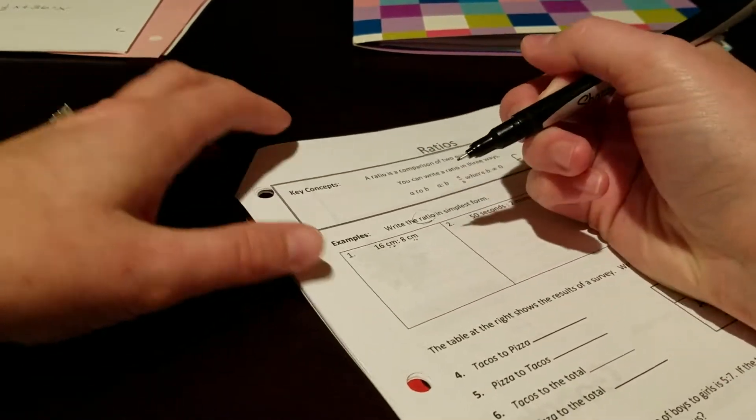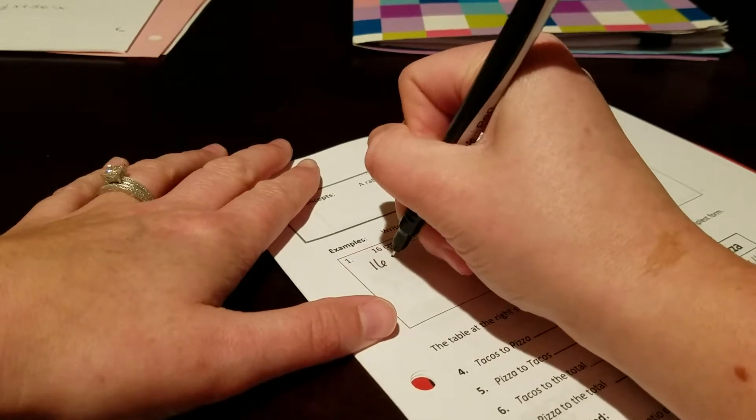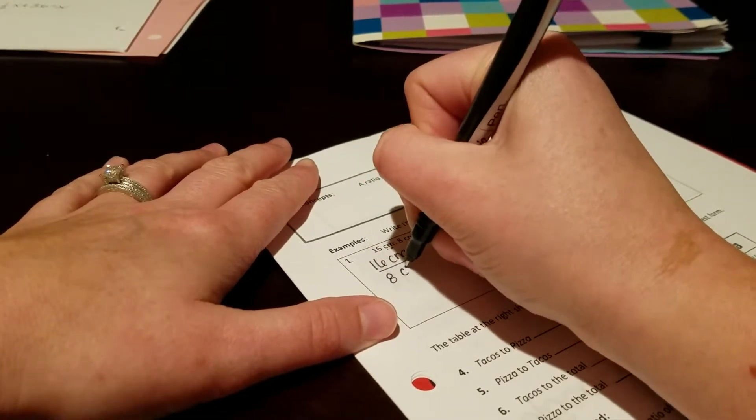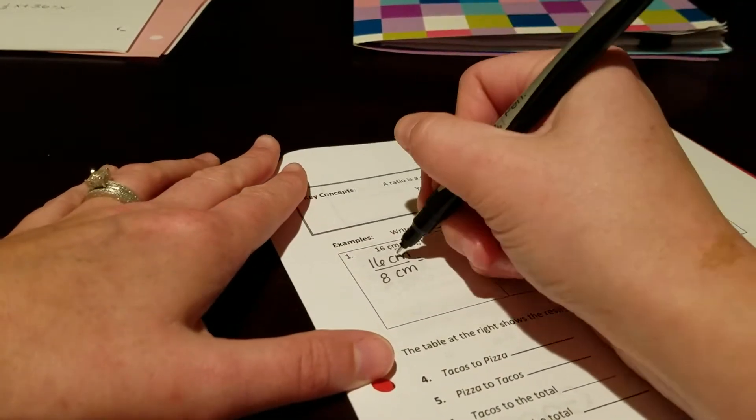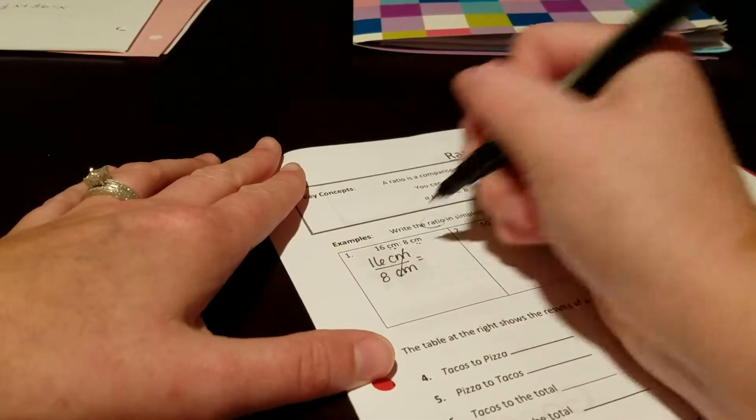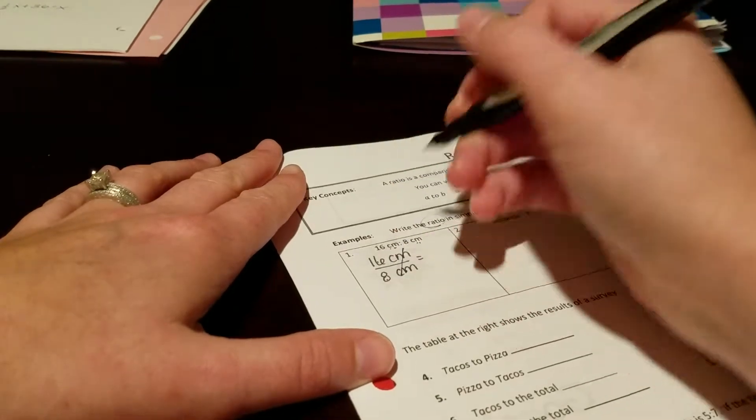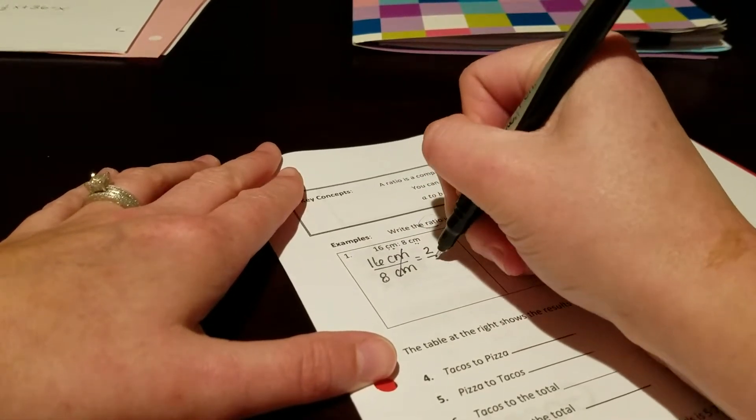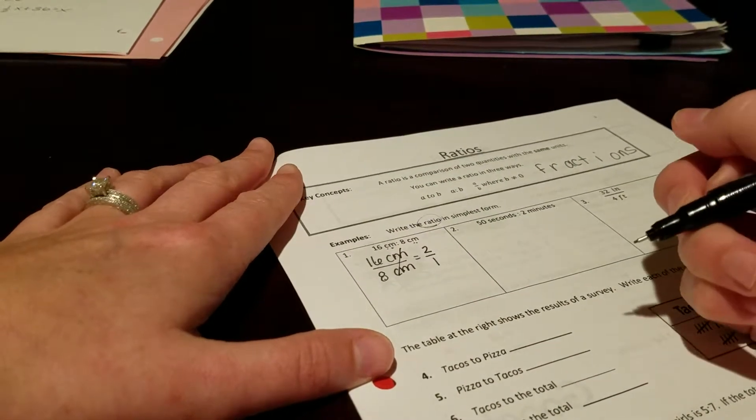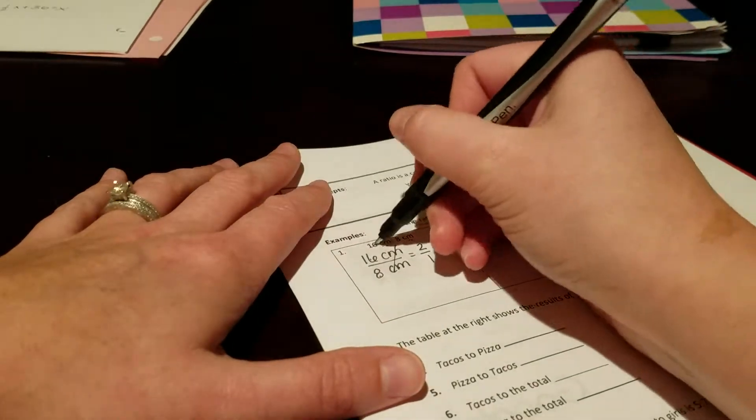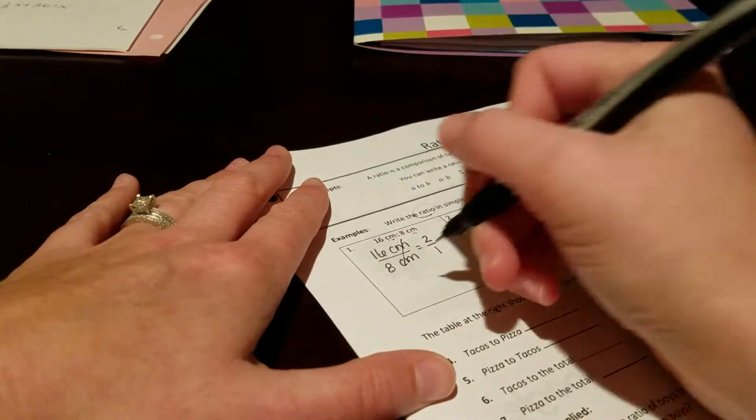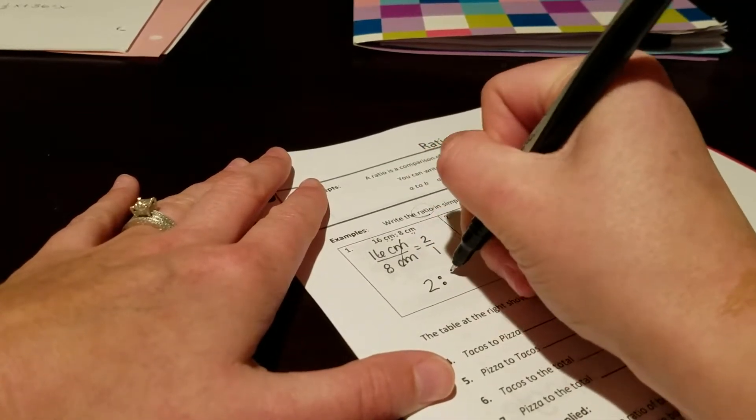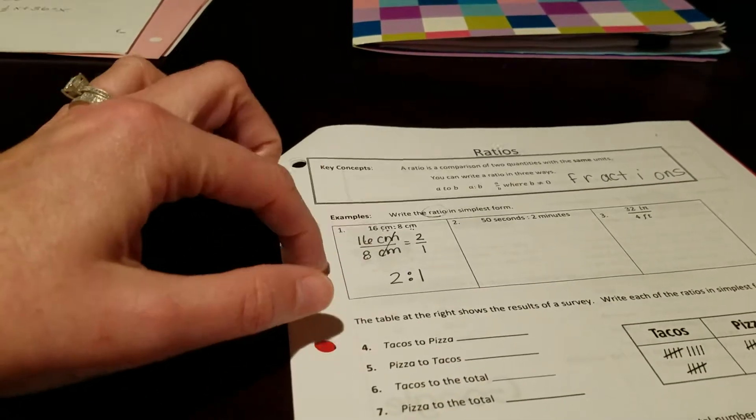So centimeters and centimeters are the same, so we're going to write it 16 centimeters. I always start as a fraction and then go back to the original form. Centimeters over centimeters cancel each other out. So 16 over 8 is really just 2 over 1. This was written with a colon, so go back to that original form. Your ratio here is 2 to 1.